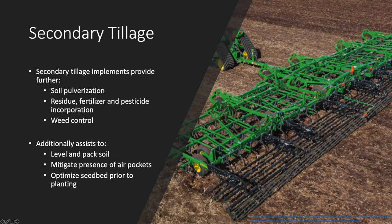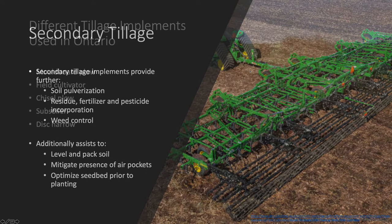Secondary tillage implements administer further soil pulverization, incorporation of surface materials, and weed control. Secondary tillage additionally assists to level and pack the soil, mitigate the presence of air pockets, and subsequently provides the formation of an optimal seedbed prior to planting.